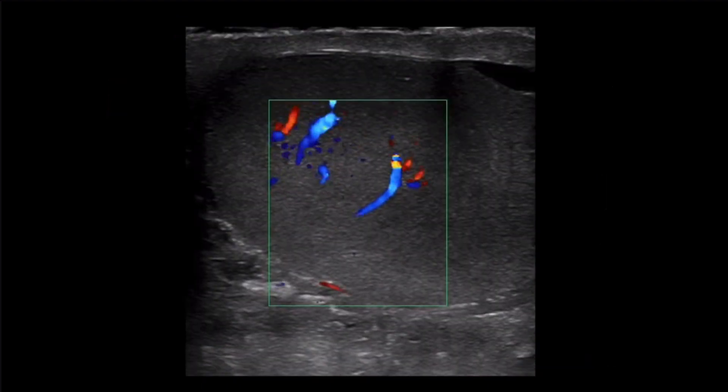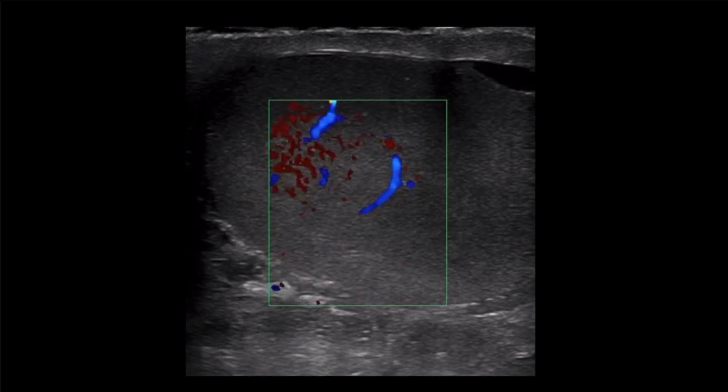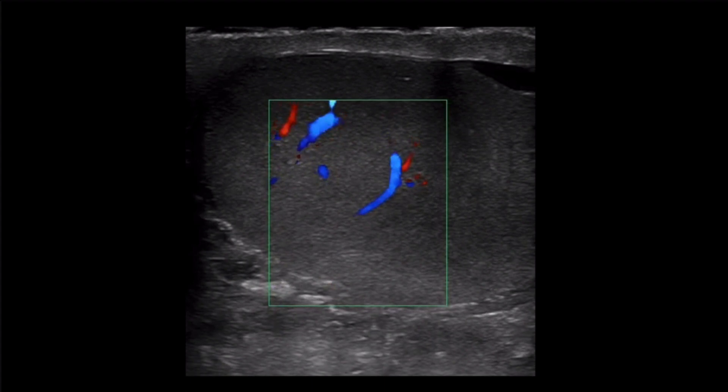The human body often provides us a comparison structure when we are evaluating for pathology. With that in mind, the treatment team visualized the right unaffected testicle. Color Doppler was utilized showing flow.